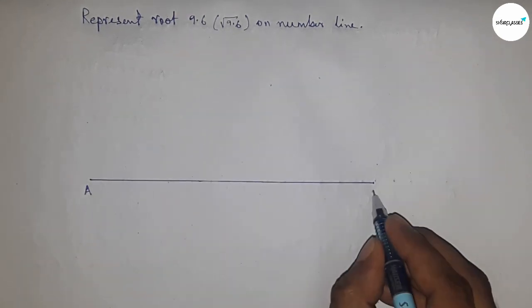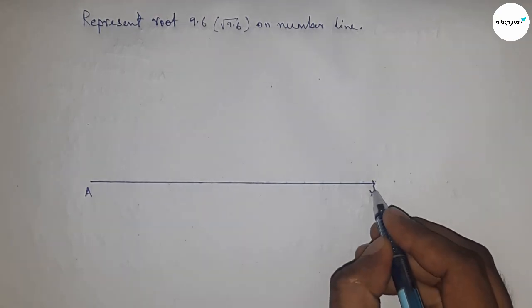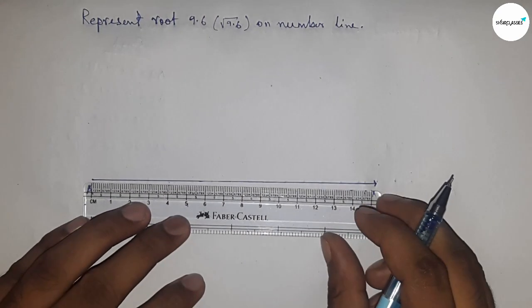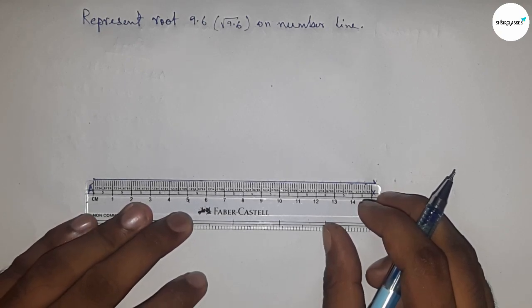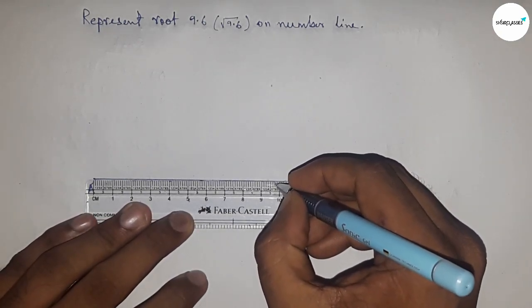First of all, draw a line of any length. This is the AX line. Next, take a length of 9.6 centimeters using a scale.